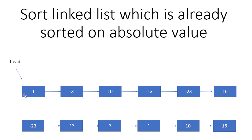There are additional edge cases to handle explicitly: if the linked list is null, return null; if there is only a single node (positive or negative), simply return it; and if the starting head node itself is negative, we need to handle our iteration starting point accordingly.